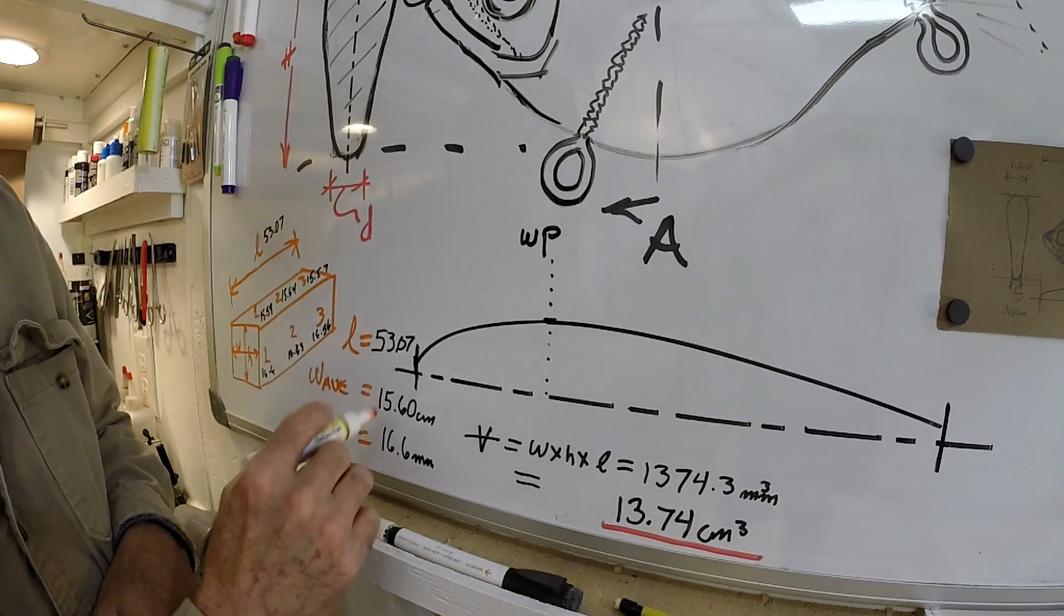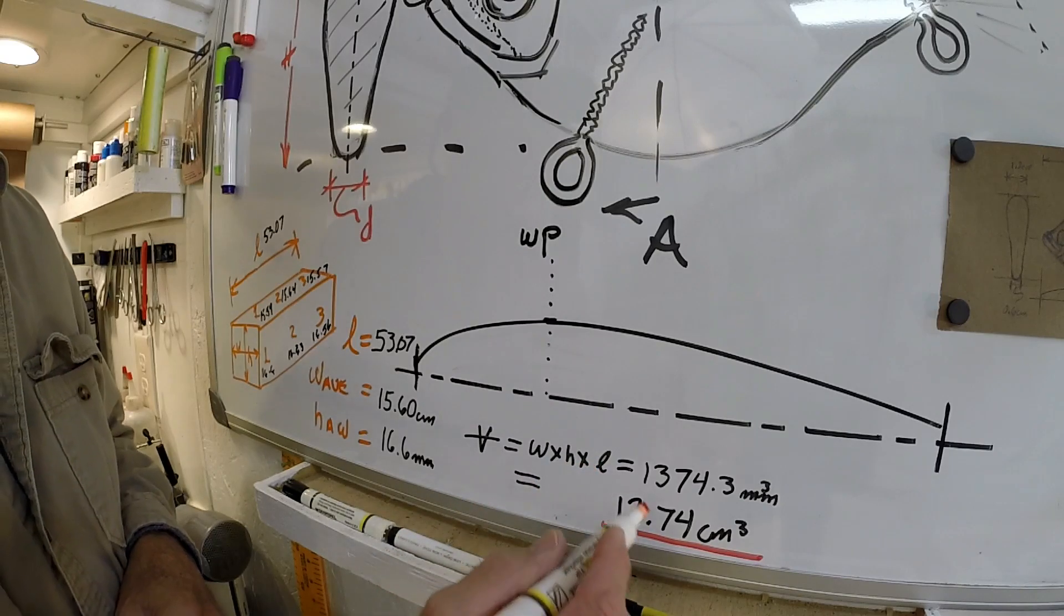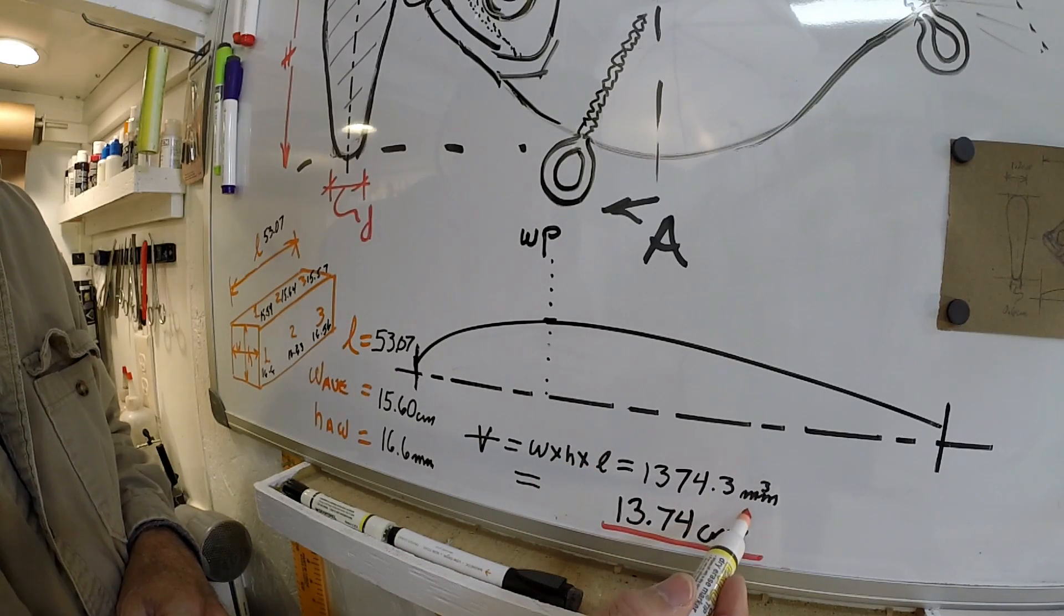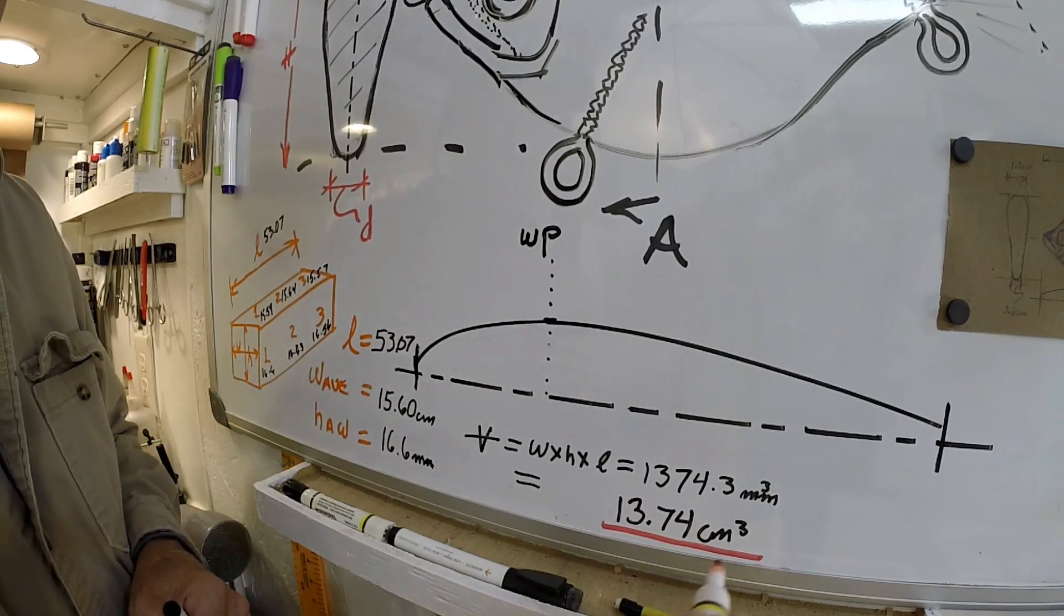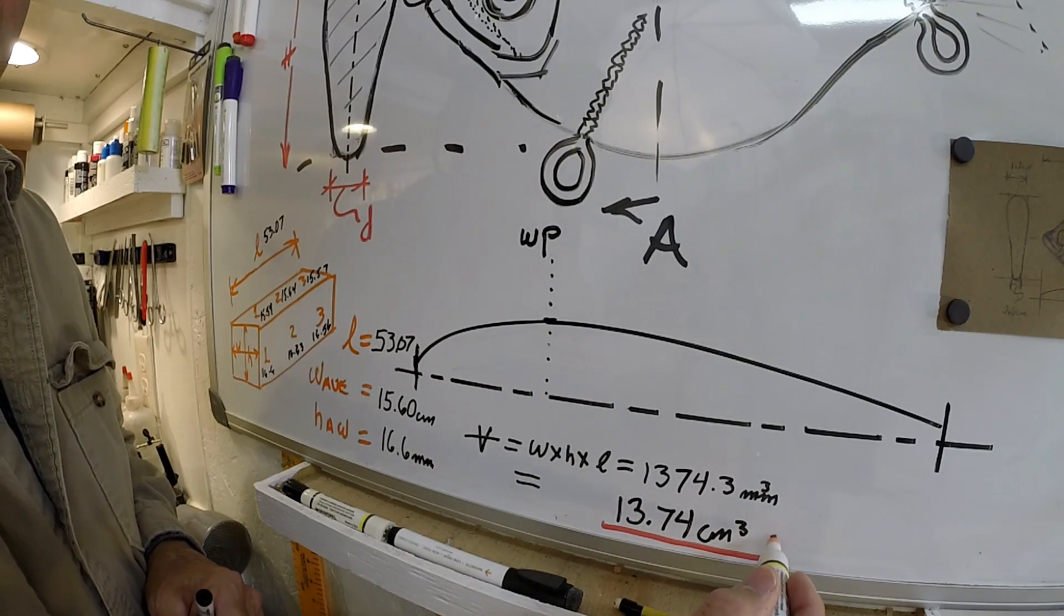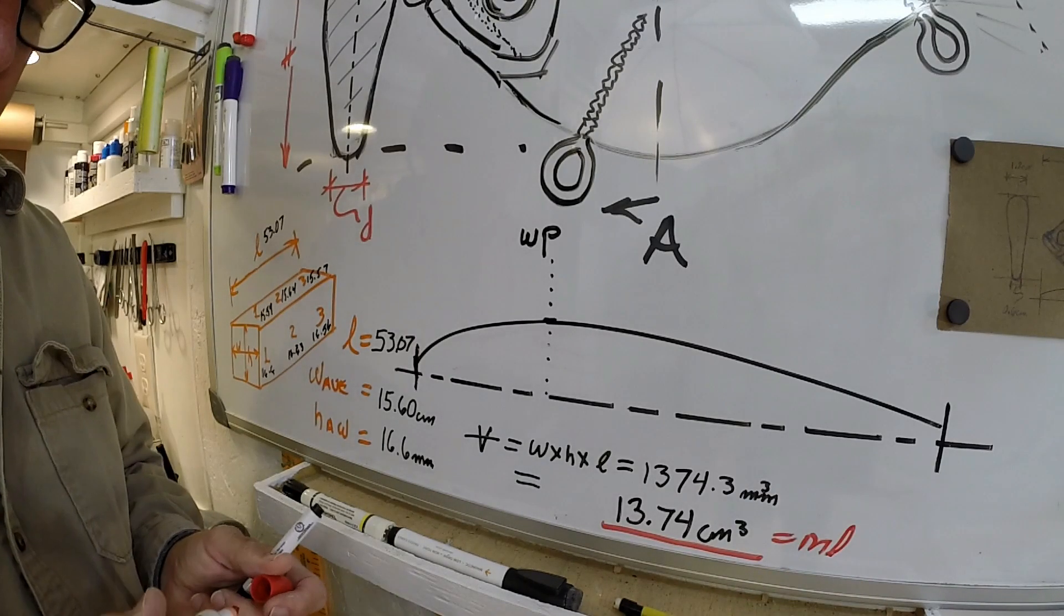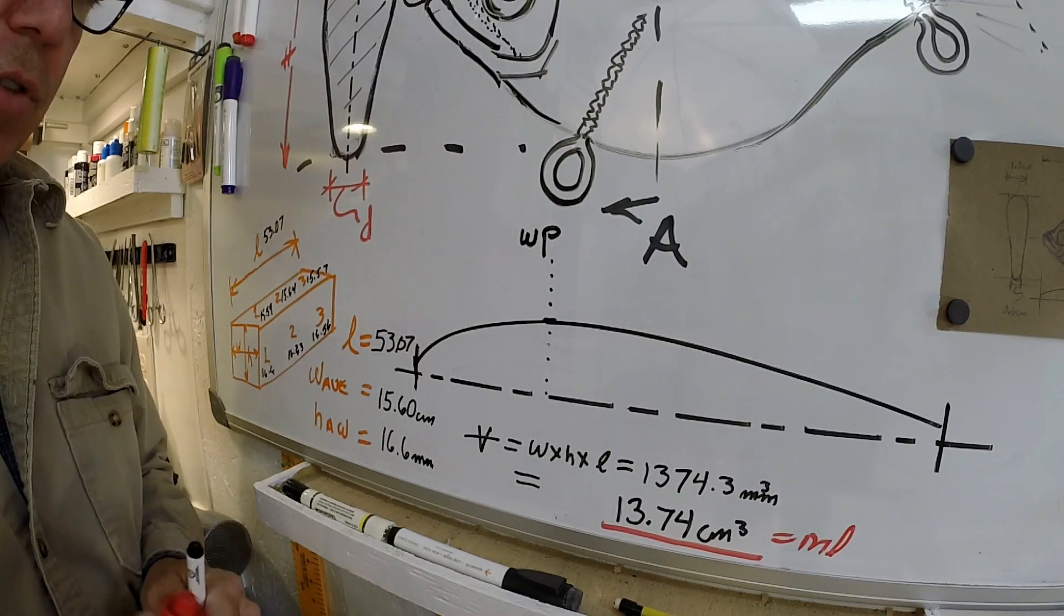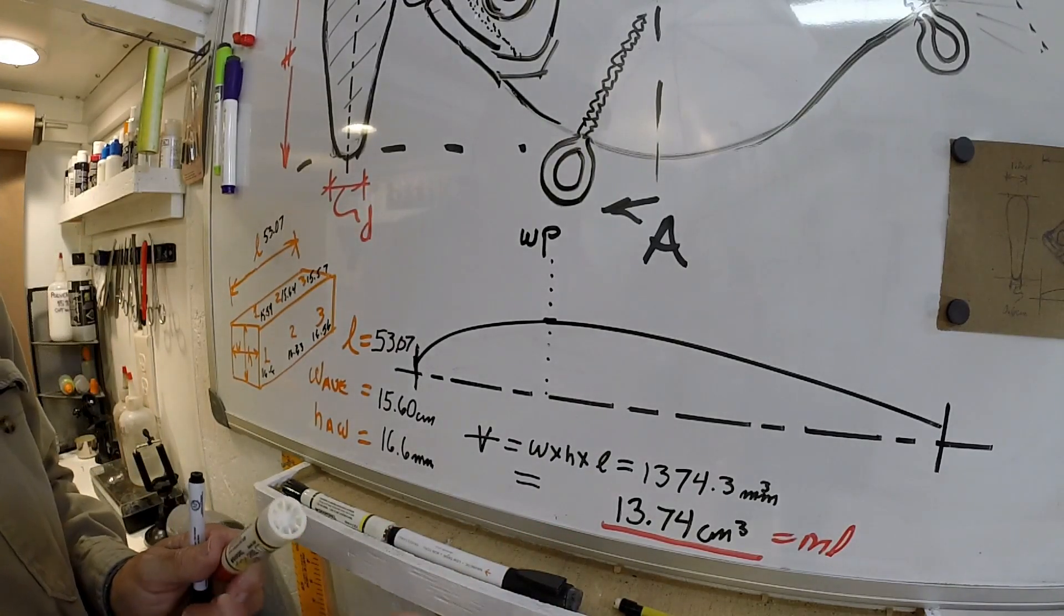There's the volume. These are the averages, so the volume is the width times the height times the length. I came out in cubic millimeters and I converted it to centimeters. The beauty of cubic centimeters is they're equivalent to milliliters, so it's real easy to do your calculations later for your volumes.